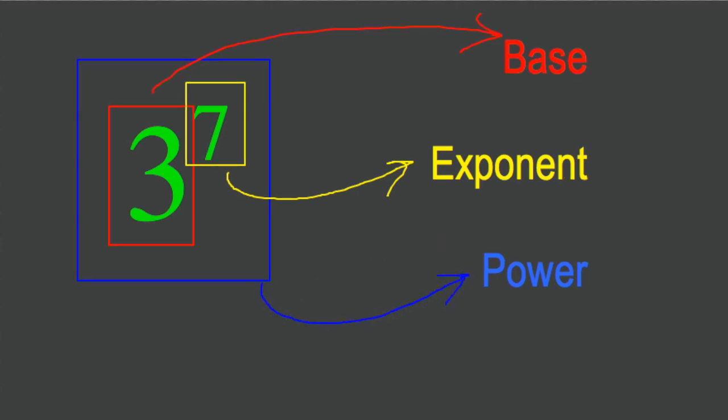Where there is some confusion is with the term exponent and the term power. Sometimes they're used interchangeably - in other words, people would refer to the seven as an exponent or as a power. That's incorrect. The seven is an exponent; the three to the seven is the power. Try and get that straight now before it causes you any difficulty when you're reading questions.